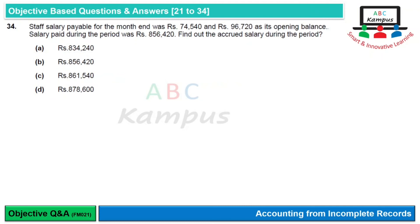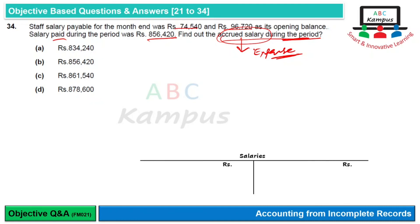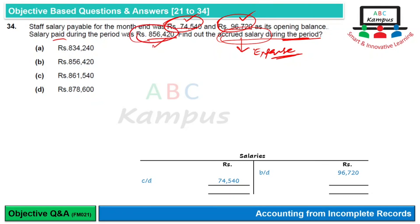Question 34: Staff salary payable — opening balance Rs. 96,720 and closing balance Rs. 74,540. Salary paid during the period Rs. 856,420. Find the accrued salary during the period। Salary payable का account बनाते हैं: opening balance given है — Rs. 96,720, closing balance given है — Rs. 74,540, salary paid debit side पर। Salary pay करते समय salary debit और cash credit होता है। As a balancing figure — expense की amount = Rs. 834,240। Option A is correct।